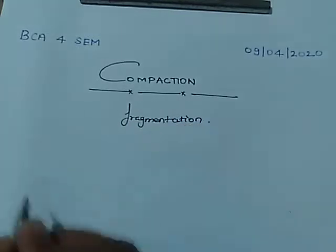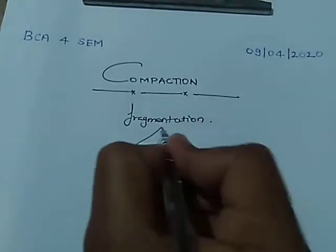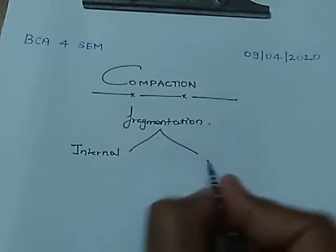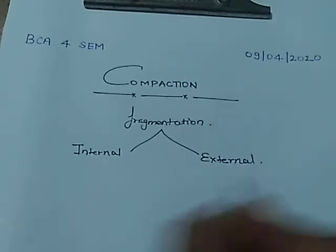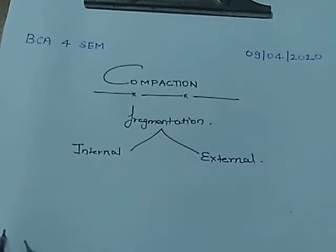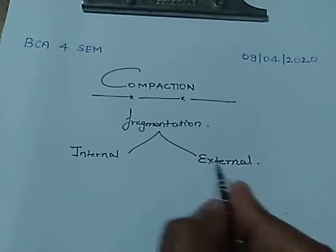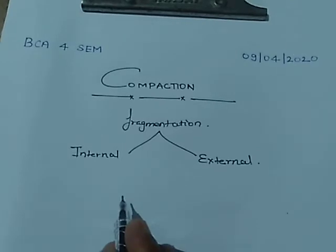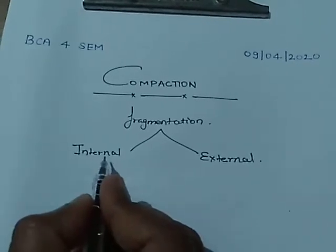As we know, fragmentation occurs when memory is allocated. These are of two types: number one is internal fragmentation and number two is external fragmentation. In internal fragmentation, fixed size partitioning is done, and in external fragmentation, variable size partitioning is done.